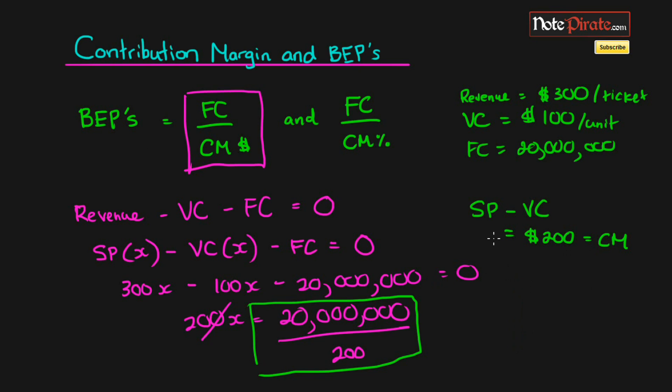So basically, the higher the contribution margin is, the lower or the closer the breakeven point is. And then the lower the contribution margin is in dollars, the higher the breakeven point.